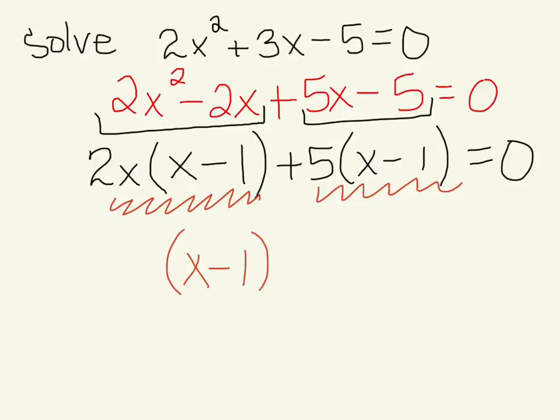Then we write out what's left over between these two terms. So if I take out x minus 1 here, we're left with 2x. If I take out x minus 1 here, we're left with 5.